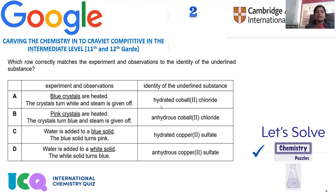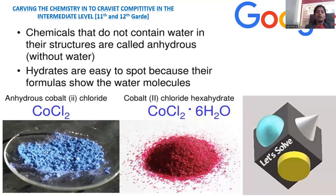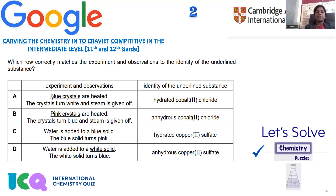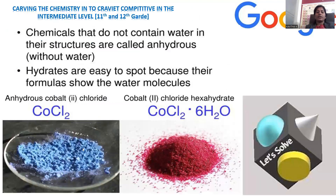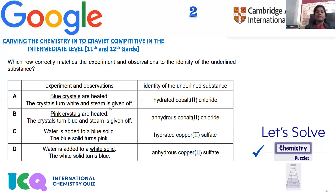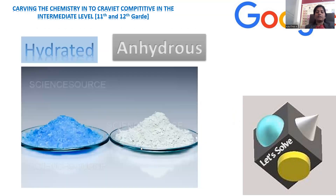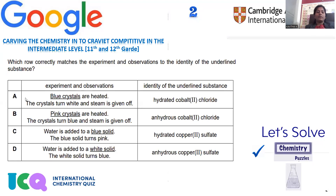They mention hydrated cobalt chloride for the blue crystals, but let's check: anhydrous cobalt chloride is blue and hydrated cobalt chloride is pink. So what they mention in the first option is wrong. In the second option: pink crystals are heated, crystals turn blue, and steam is given up. Pink crystals being heated means we are heating the hydrated form, which is correct.